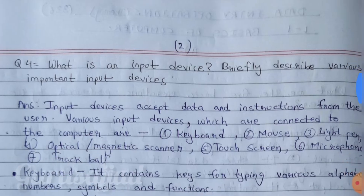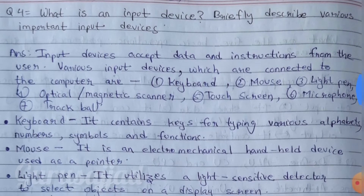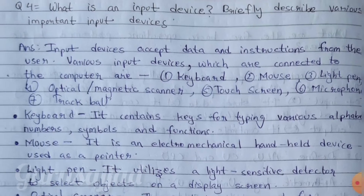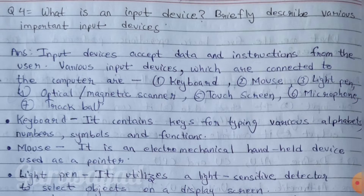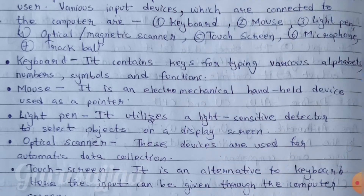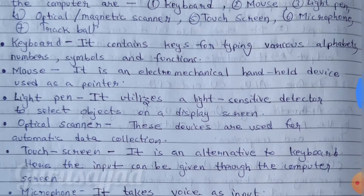Question no. 4: What is an input device? Briefly describe various important input devices. Answer: Input devices accept data and instructions from the user. Various input devices connected to the computer are: number one, keyboard; number two, mouse; light pen; optical and magnetic scanner; touch screen; microphone; track ball. The keyboard contains keys for typing various alphabets, numbers, symbols and functions.